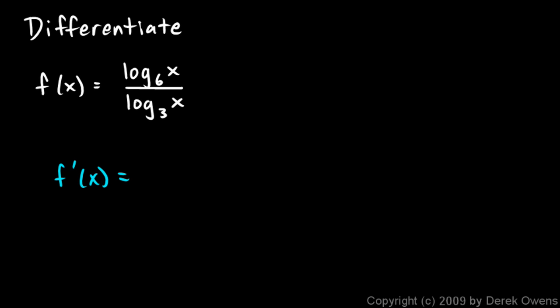will be the derivative of the numerator times the denominator. Let's write that. The derivative of the numerator is going to be 1 over x times the natural log of 6 times the denominator, which...